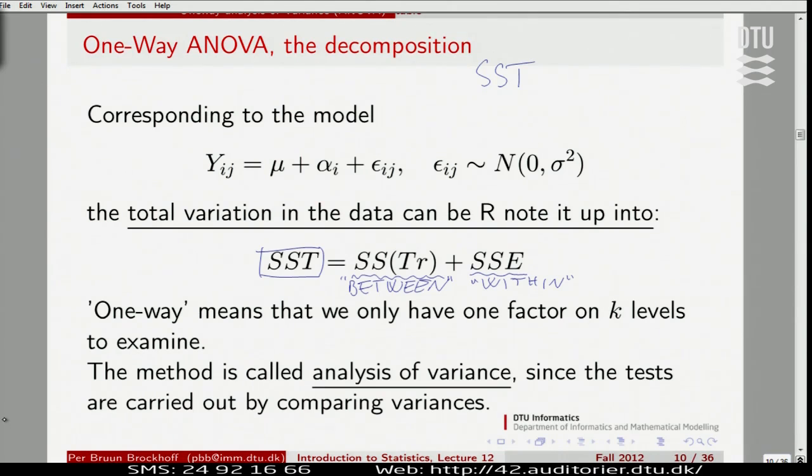The total variation in the data is just taking all individual data points, comparing directly with the raw average across everything and adding all 12 numbers up. In this case, in the general notation, we summarize across all the groups, across individual observations within the groups. In our case, it's 12 numbers.